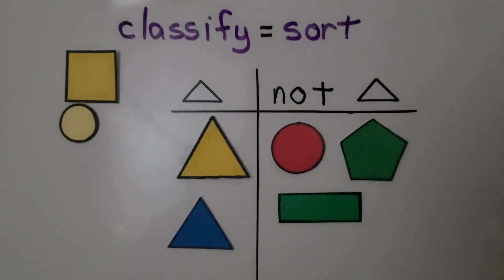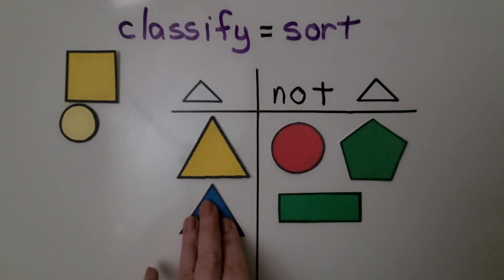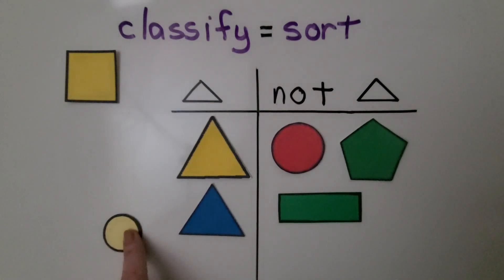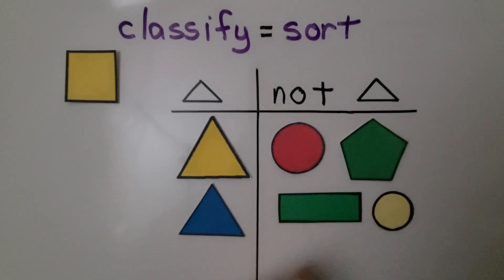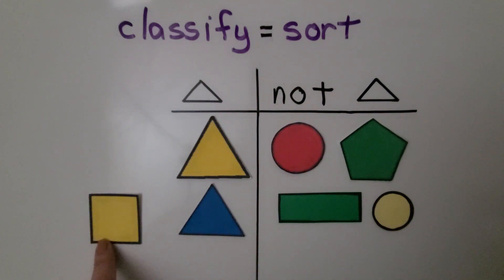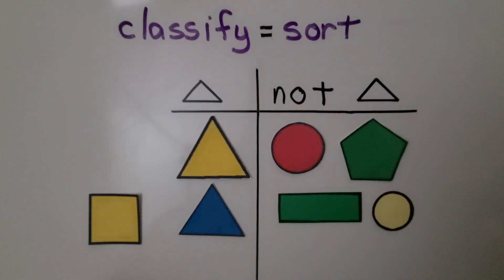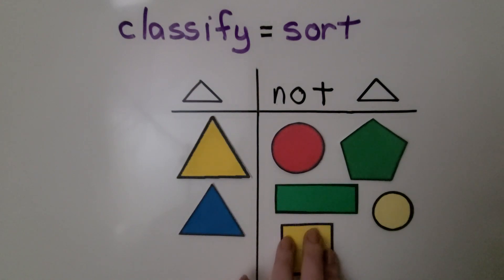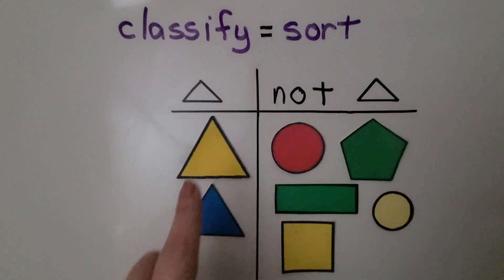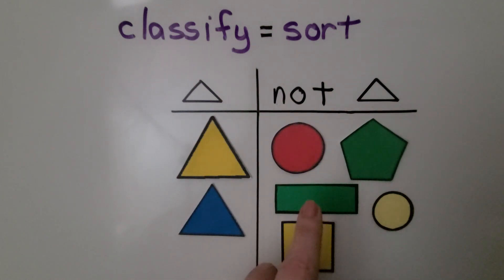Is this a triangle? What do you think? If you said yes, you're right — we can leave it on the triangle side. Is this a triangle? That's a circle, isn't it? That's not a triangle; it can go with not-triangle. Is this a triangle? It has one, two, three, four sides — no, it has too many sides. That goes with not-triangle. We have two triangles and five that are not triangles.